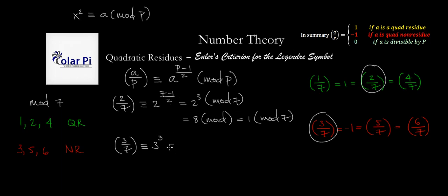Which is equal to 27 mod 7. But 27 when we reduce mod 7 is going to equal 6 mod 7—how wonderful, because we all know that 6 is the same as negative 1 mod 7. And therefore, as expected, we have 3 over 7 is equal to negative 1.